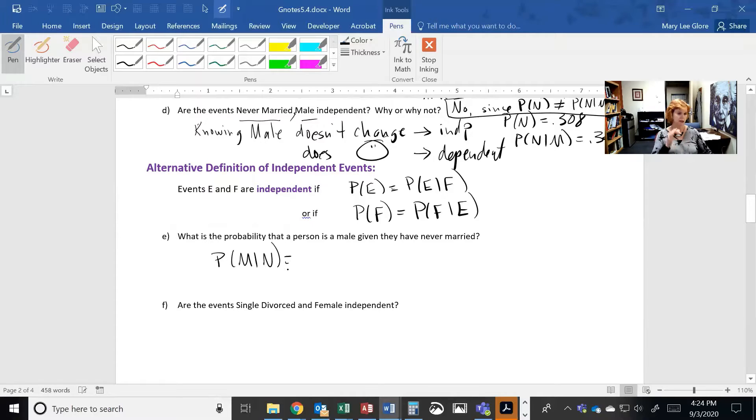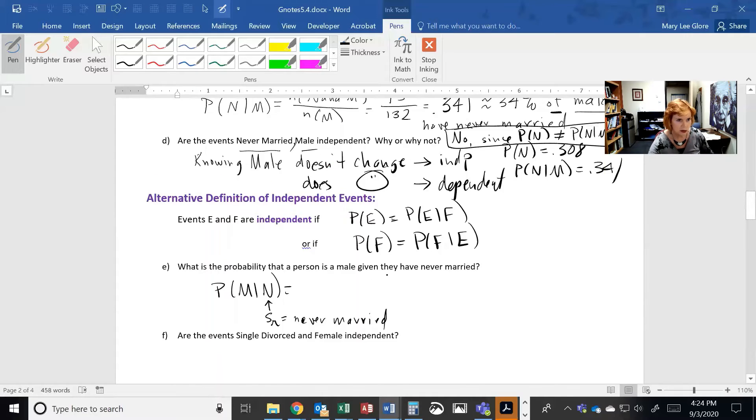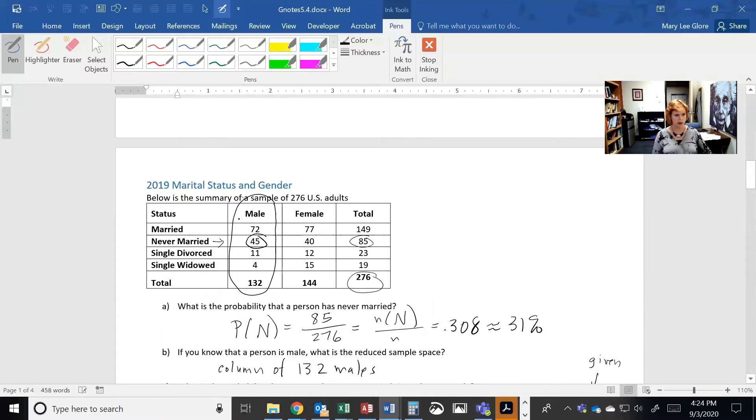I'm just going to show you that's not the same thing. Now my reduced sample space is going to be based on this guy. So my reduced sample space is going to be all the never married people. And that is going to be this row right here. This is my reduced sample space for never married.